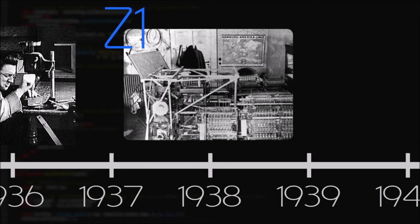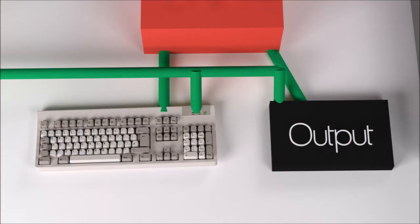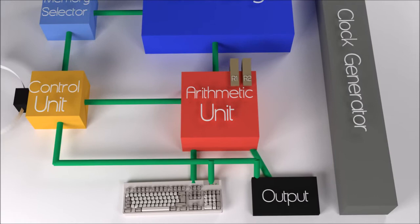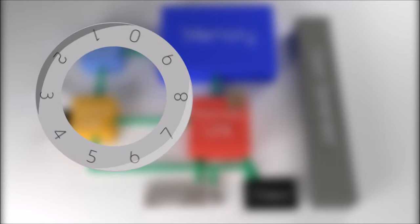The prototype, later named the Z1, was completed in 1938 and was made up of 20,000 separate components. Numbers were input on a keyboard and processed by a program on punch tape, and the results were displayed on an output console. It was built completely from scratch.